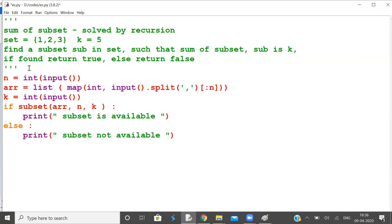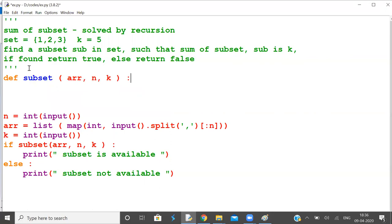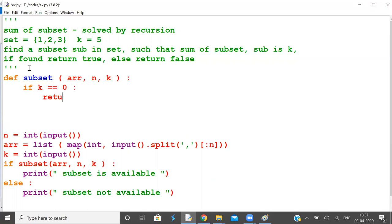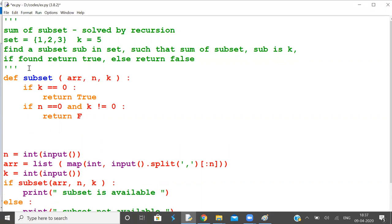Now let us write the function. Define subset, inputs are array, n, and k. If k equals zero, exit condition, return true. If n is zero and k not equal to zero, return false.